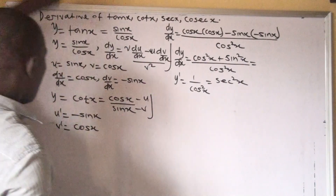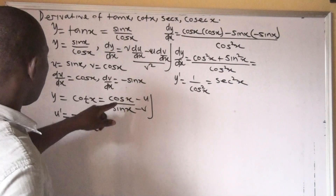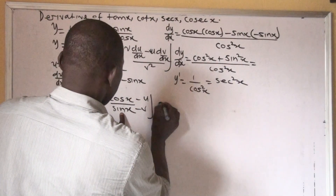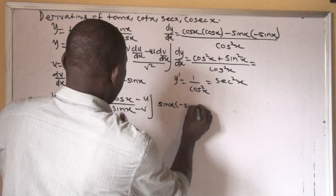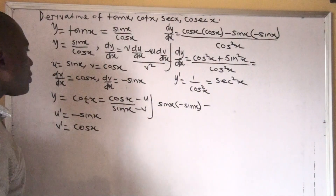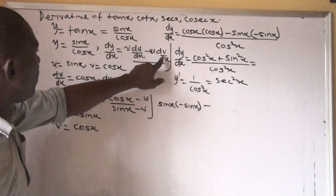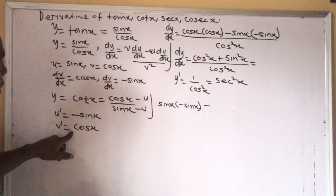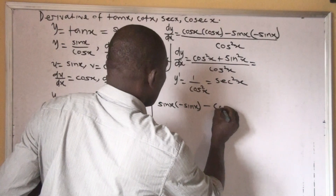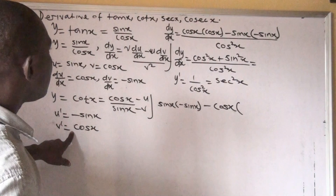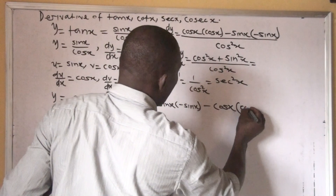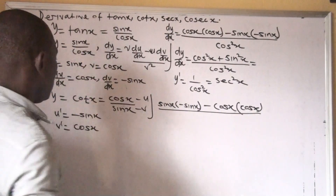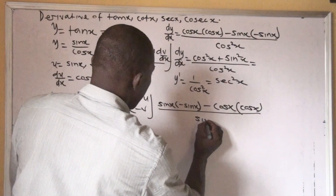We apply the quotient rule: v·du minus u·dv, all over v squared. Our v is sin x, and our du is minus sin x, so we have sin x times (minus sin x). Then minus u, which is cos x, times dv, which is cos x. Everything over v squared, which is sin squared x.